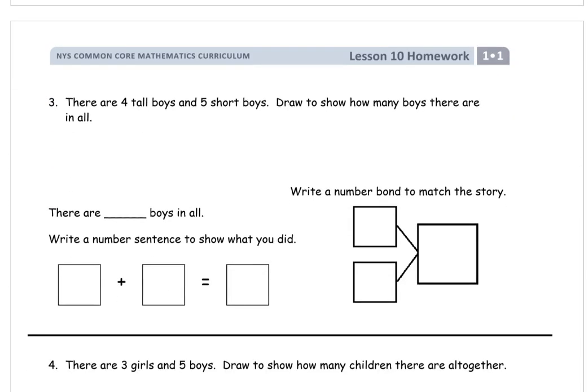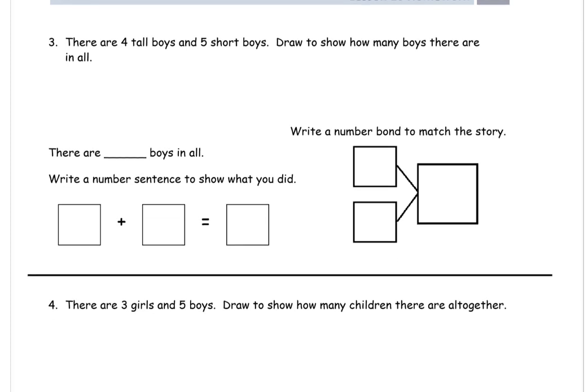We have a second page for this homework. Number three. There are four tall boys and five short boys. Draw to show how many boys there are in all. Have to draw, right? So we read, R. We're going to draw, D. Then do that next. And then we're going to write our answer. RDW: Read, draw, write. All word problems.